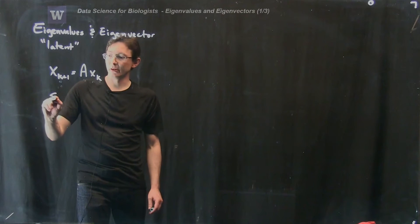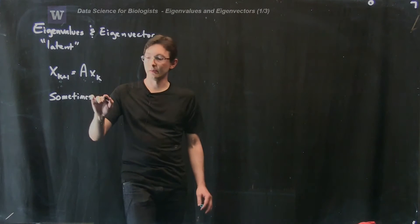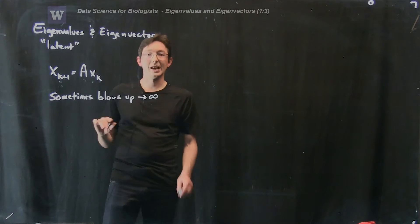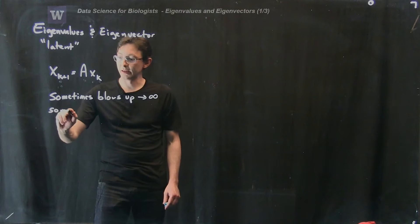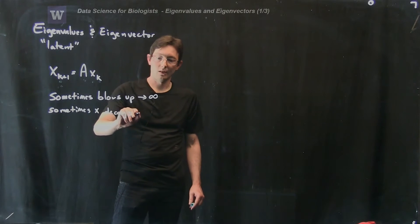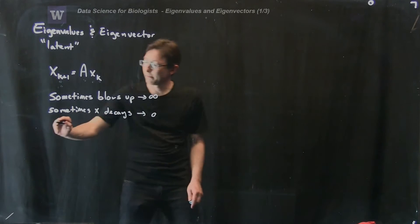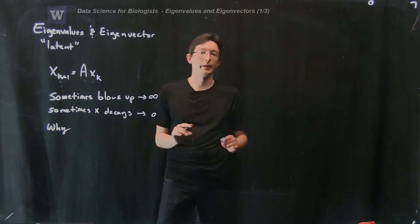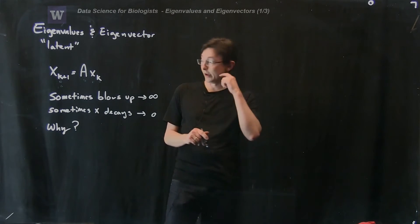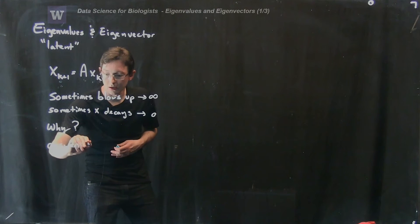We notice that this sometimes blows up to infinity — sometimes x blows up — and sometimes it decays to zero. And we want to know why. The answer to why we find through looking at the eigenvalues and the eigenvectors of this matrix A. So the answer is eigenvalues of A.